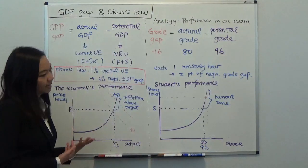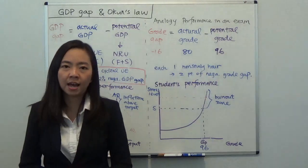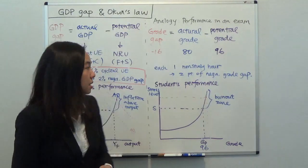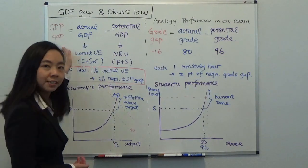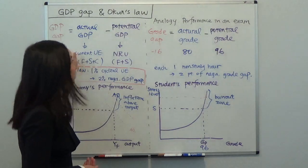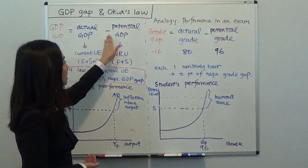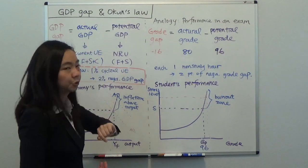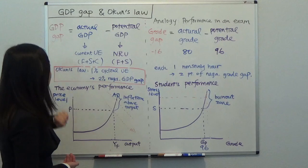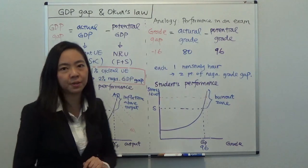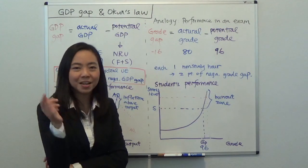Now you might ask: is it possible to have a positive GDP gap? Of course the answer is yes. If your actual GDP is higher than potential GDP, then you will have a positive GDP gap. But how is that possible?